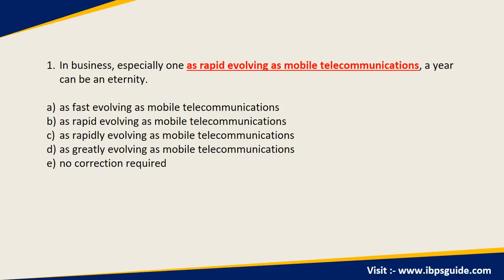Let's take a look at the first example: 'In business, especially one as rapid evolving as mobile telecommunications, a year can be an eternity.' Let's take a look at the meaning first. They're saying that in a business that grows very fast, a short time can feel like a very long period of time, because so many things happen in such a short span of time. Based on just the meaning, we can eliminate option D since we know that we are talking about the span of time and the speed of things.